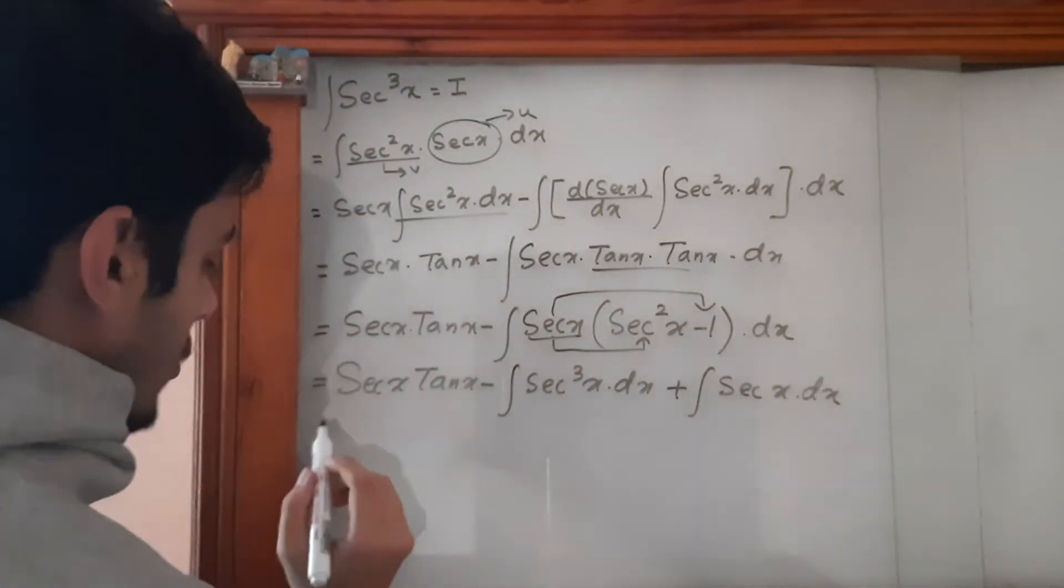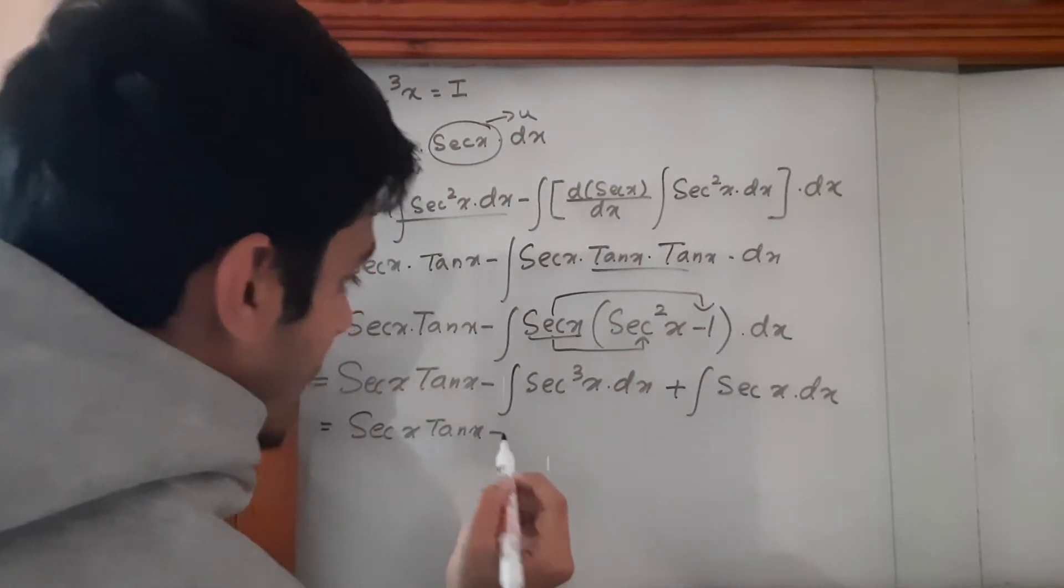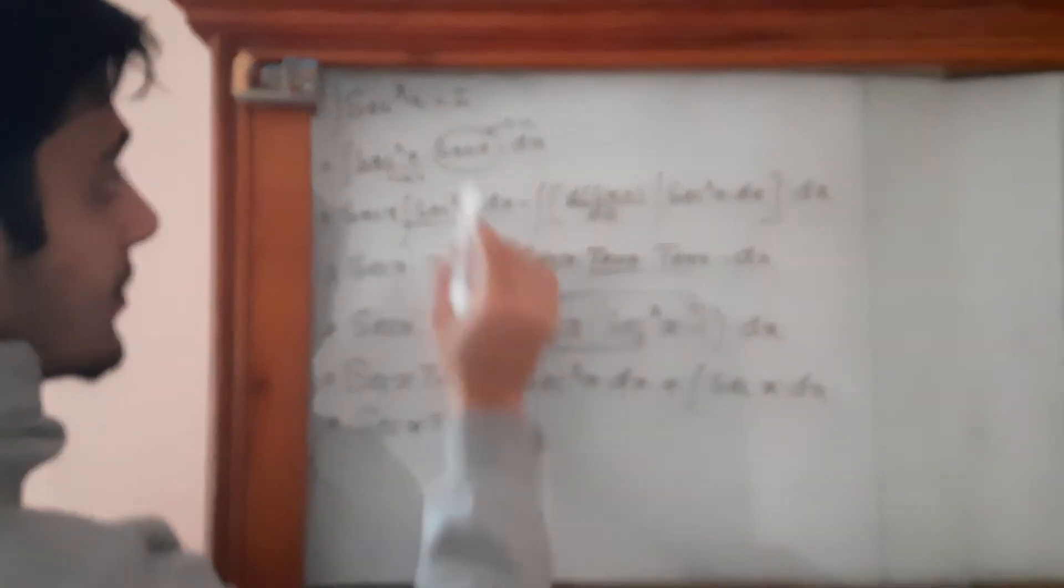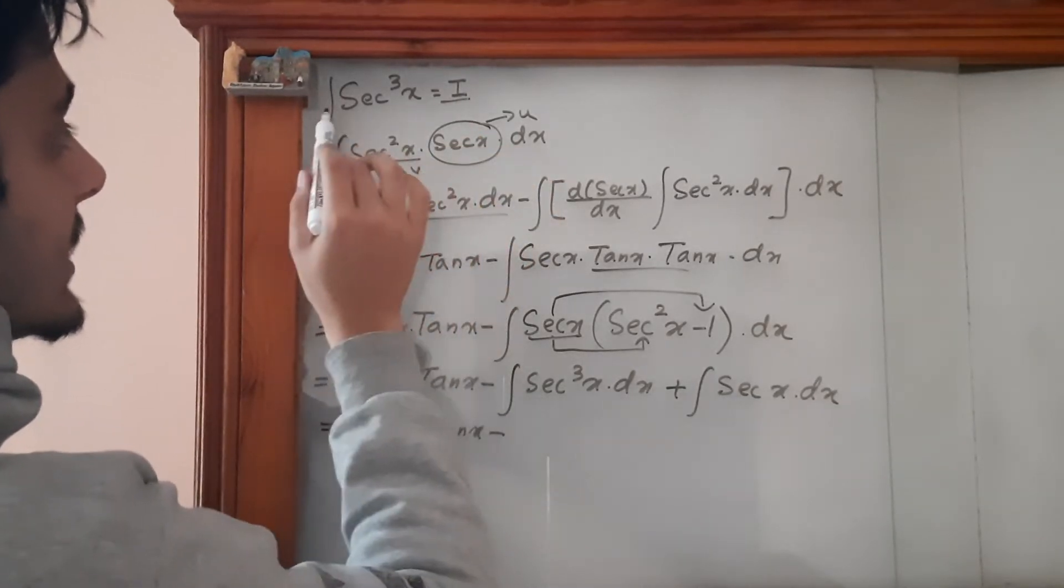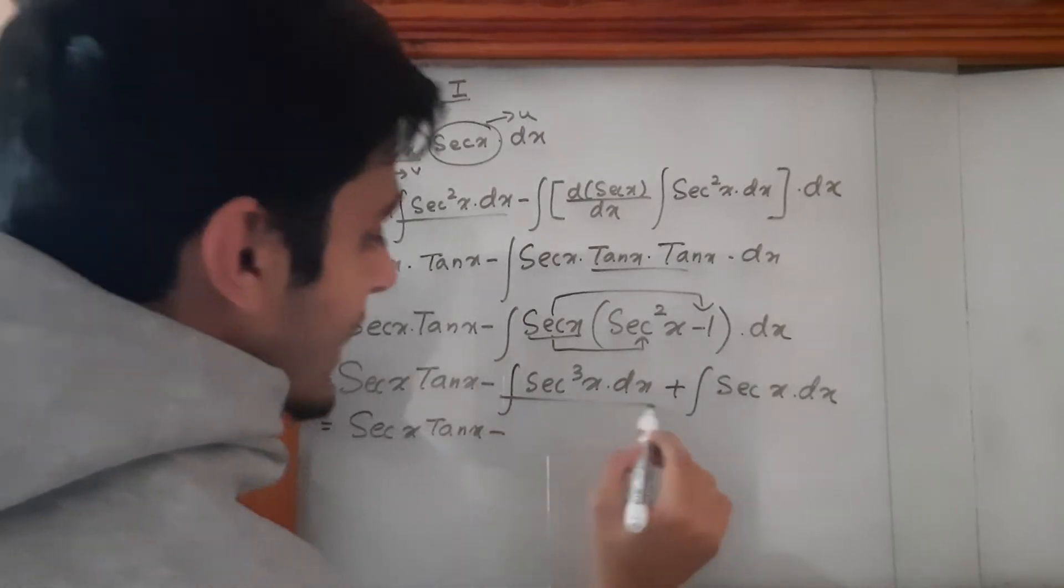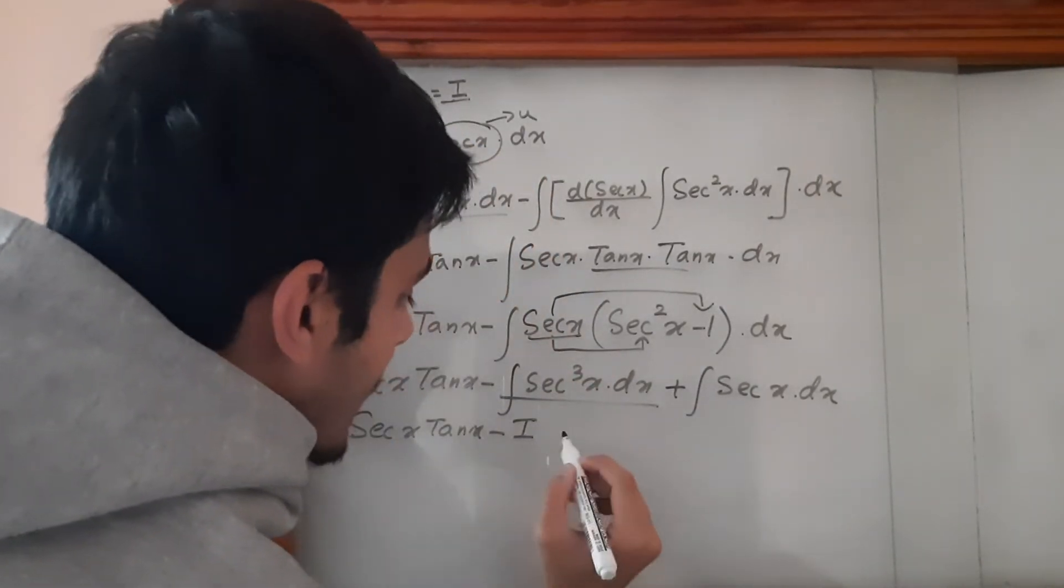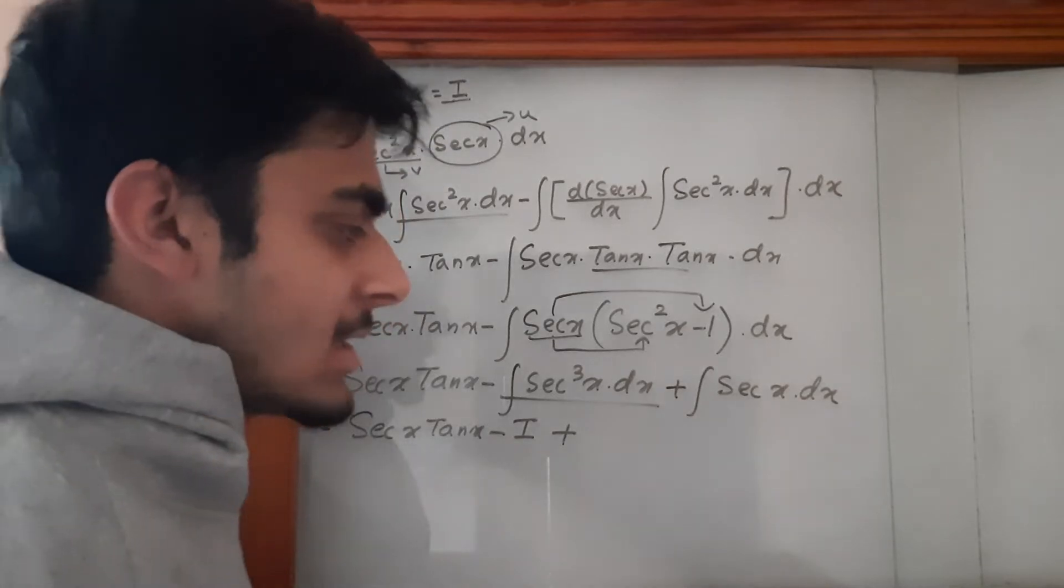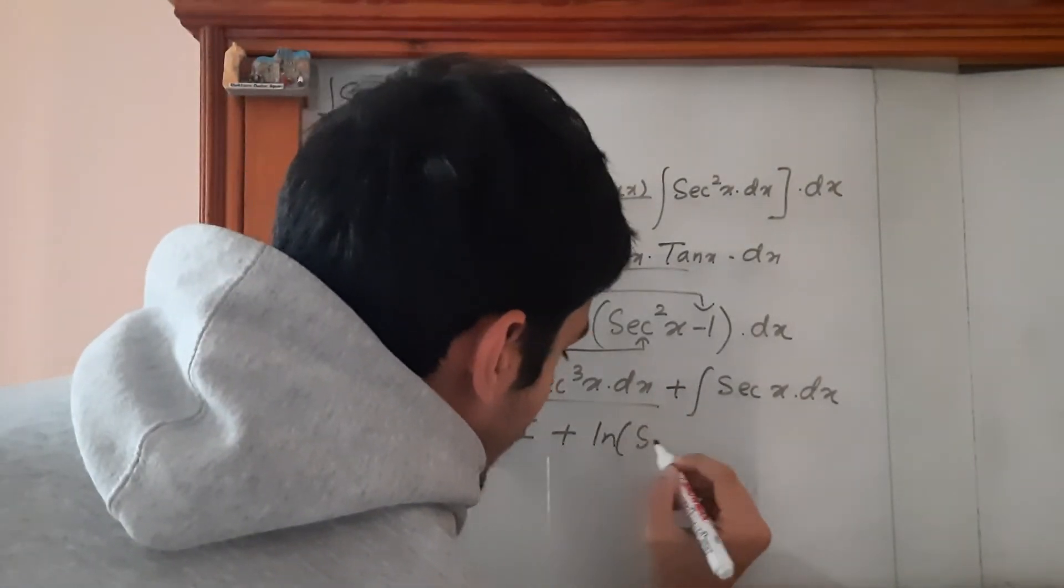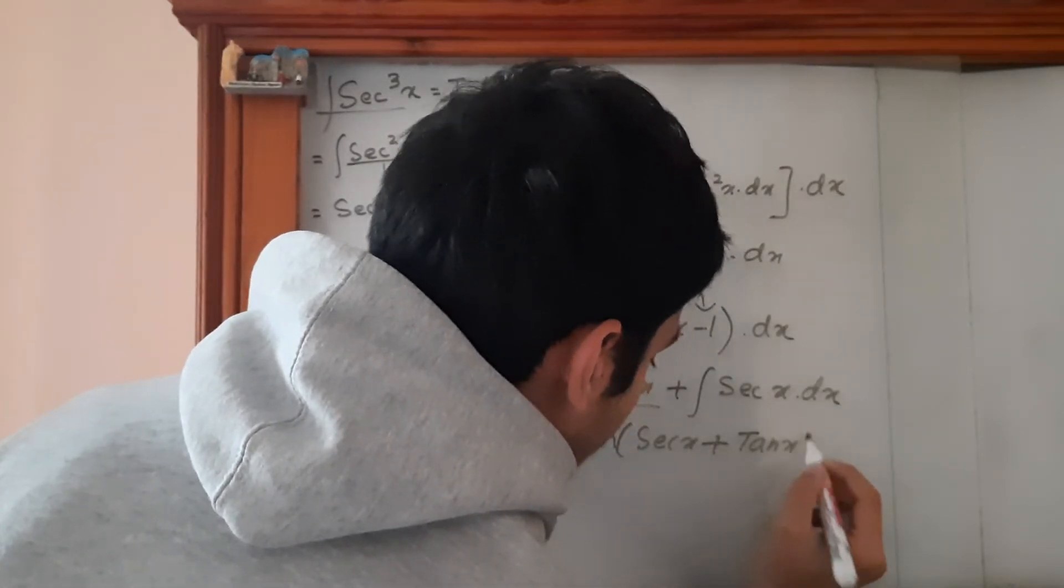Now the importance of letting this integral be I comes here. We can write ∫sec³x dx as I, and the integration of secx is ln(secx + tanx).